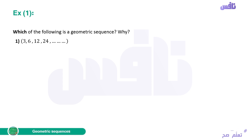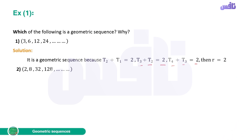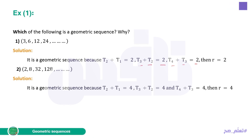Consider the sequence 2, 8, 32, 128. It is a geometric sequence because T2 divided by T1 is 8 divided by 2 equals 4; T3 divided by T2 is 32 divided by 8 equals 4; T4 divided by T3 equals 4. So R equals 4.